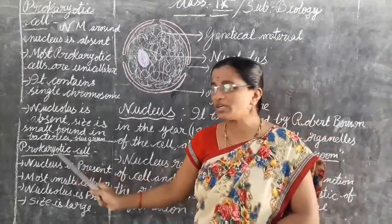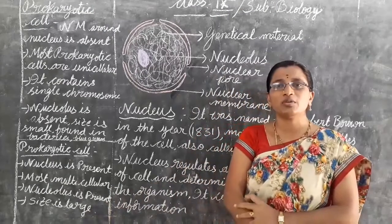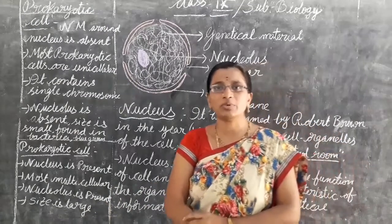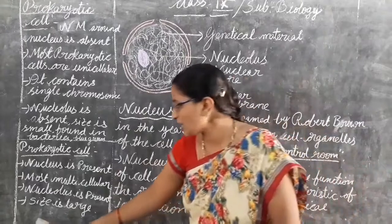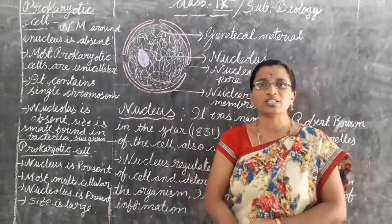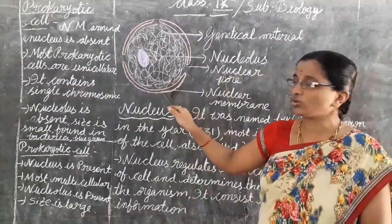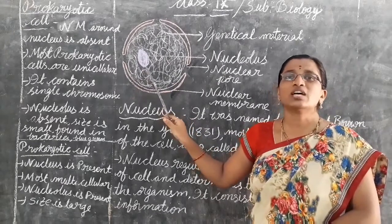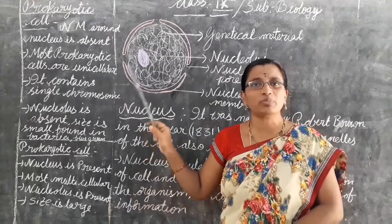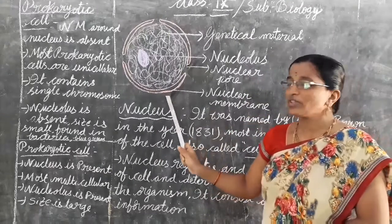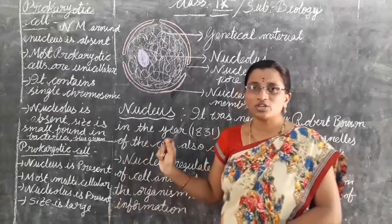Now for eukaryotic cells: eukaryotic cells are multicellular organisms present in human beings, plants, etc. The nuclear membrane is present in eukaryotic cells and their size is larger than prokaryotic cells. The nucleolus is present in eukaryotic cells and absent in prokaryotic cells. Size is larger in eukaryotic cells and smaller in prokaryotic cells. Nuclear membrane is present in eukaryotic cells and absent in prokaryotic cells.